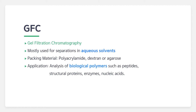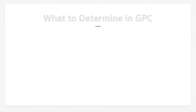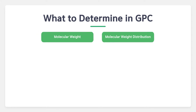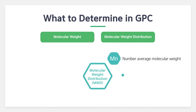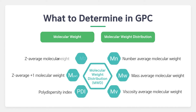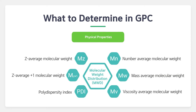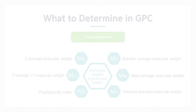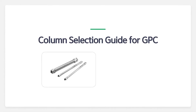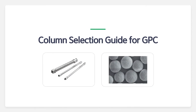The most important thing in GPC is the determination of molecular weight and molecular weight distribution. Let's move to the next topic: the column selection guide for GPC.